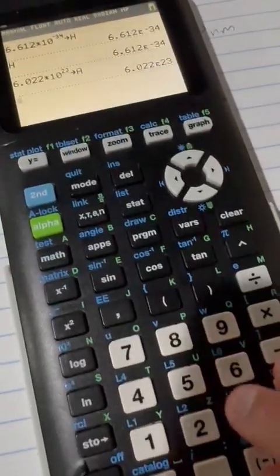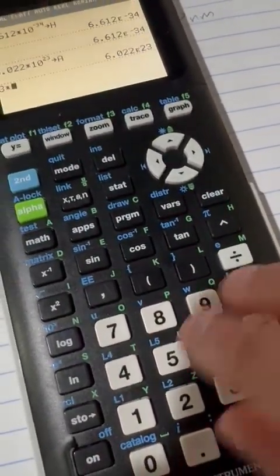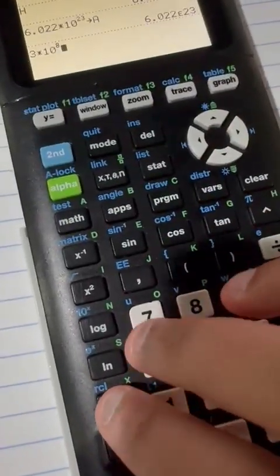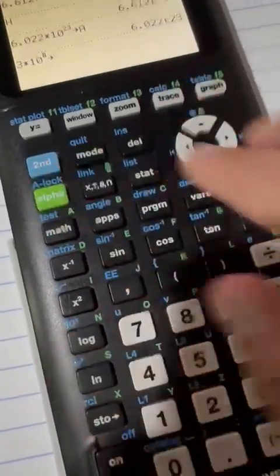And I want to do the same thing for the speed of light. Speed of light is 3 times 10 to the power of 8. So we go ahead and store this in C.